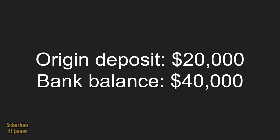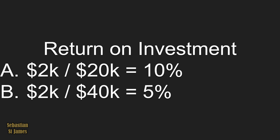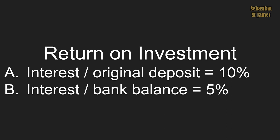Here is a third story. You deposit $20,000 into a bank. The original deposit was $20,000 ten years ago. The bank balance as of today is $40,000. The interest paid by your bank is $2,000. Is your return on investment $2,000 divided by $20,000 — which is 10% — or $2,000 divided by $40,000 — which is 5%? Lock in your answer, no changing your mind.